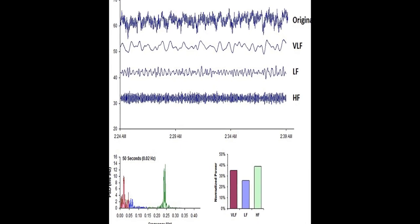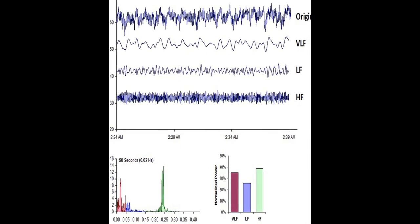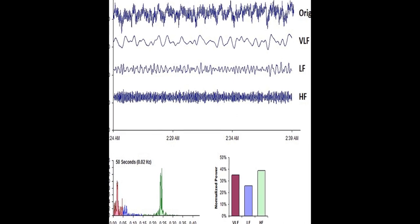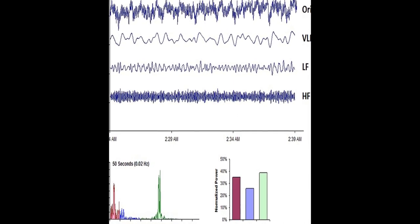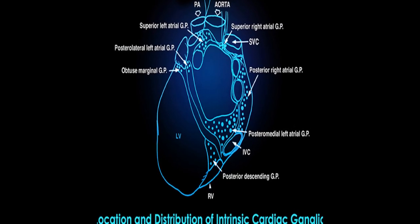Heart rate variability, HRV, refers to the variation in time between each heartbeat, resulting from the interplay of multiple regulatory systems operating on different time scales.